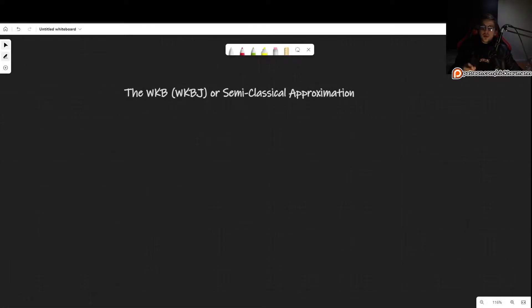Welcome. In this video, we will begin discussing the WKB or also WKBJ approximation, which is also called the semi-classical approximation. Now, WKB stands for Wenzel, Kramers, and Bruyen, and the J that is sometimes added, I believe, stands for Jeffries, which is another scientist that was also working on this approximation at the time.